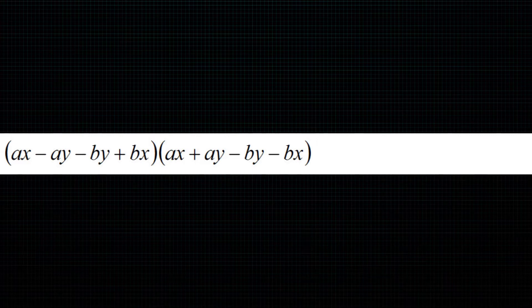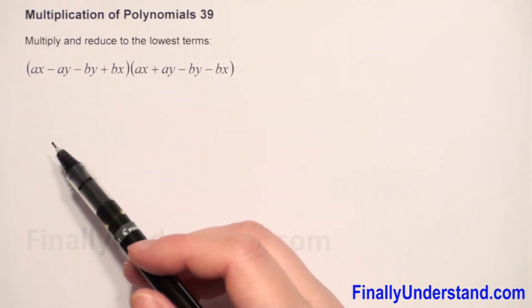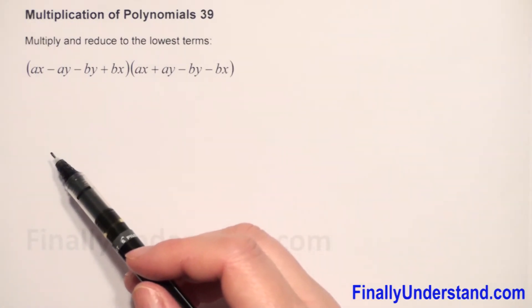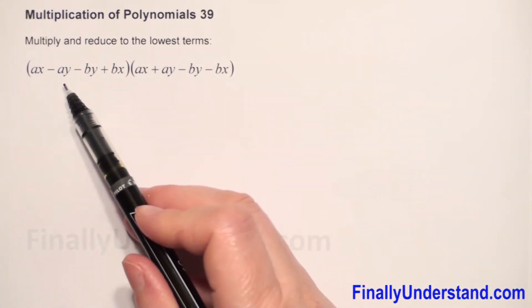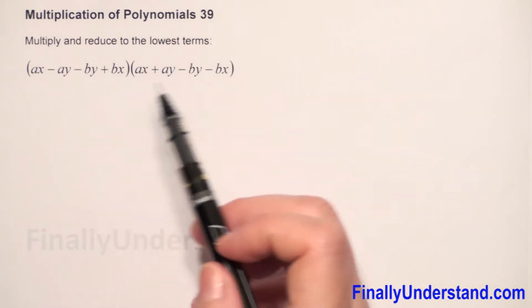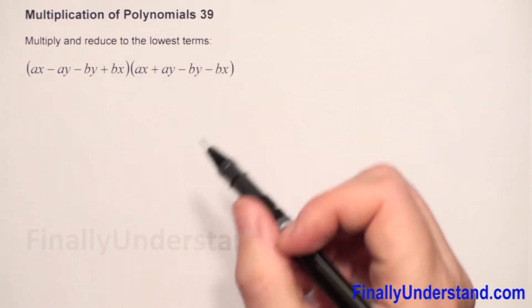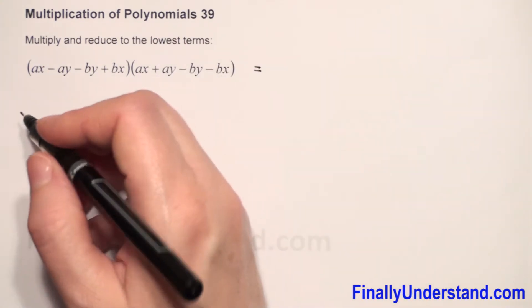We have multiplication of polynomials. We have two polynomials in parentheses. How we do multiplication? We have to multiply every expression in the first parenthesis by every expression in the second parenthesis.